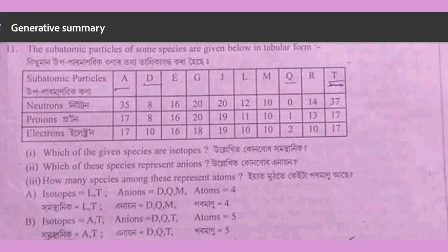Chlorine-35 has 17 neutrons and 17 protons and 17 electrons. Chlorine-37 also has 17 protons. So this is chlorine.